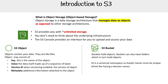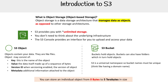S3 is a universal namespace, so bucket names must be unique — it's kind of like picking your own domain name, sometimes fun, sometimes not. The other thing is that you can store an individual object anywhere from zero bytes to five terabytes in size, so you have that range to work with.